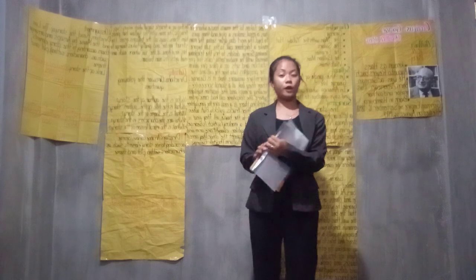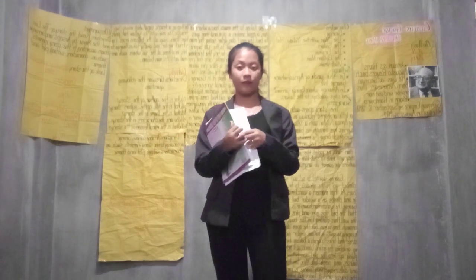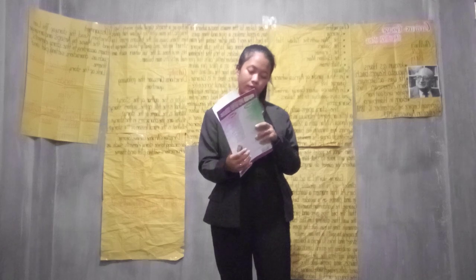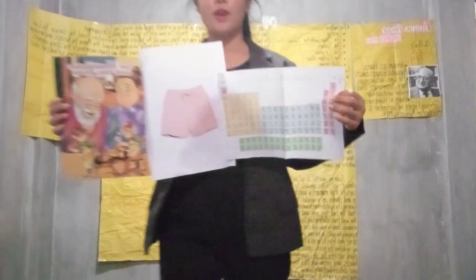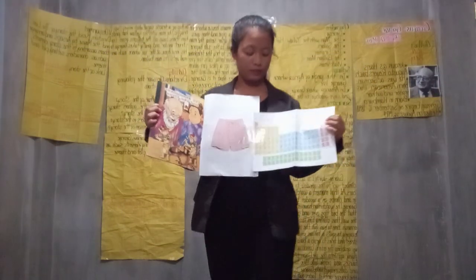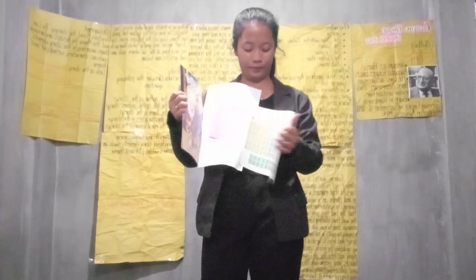This activity is called 4 Pics, 1 Word with a twist because we only have here 3 pictures and 5 words. The first learner who will get the answer will have a prize later. The answer is the elements of a short story. Our topic for today is connected to the elements of the short story.